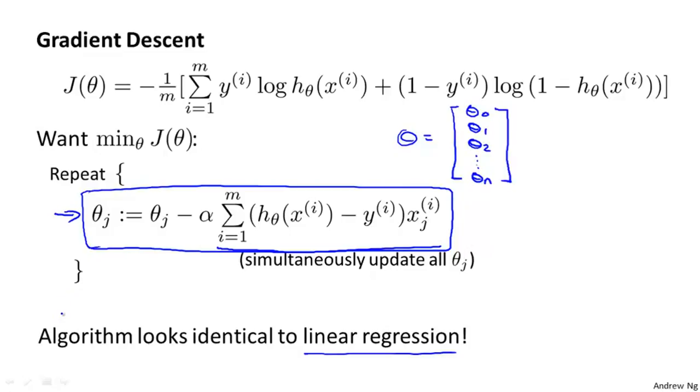So are linear regression and logistic regression different algorithms or not? Well, this is resolved by observing that for logistic regression, what has changed is that the definition for this hypothesis has changed. So whereas for linear regression, we had h of x equals theta transpose x, now the definition of h of x has changed and is instead now 1 over 1 plus e to the negative theta transpose x. So even though the update rule looks cosmetically identical, because the definition of the hypothesis has changed, this is actually not the same thing as gradient descent for linear regression.